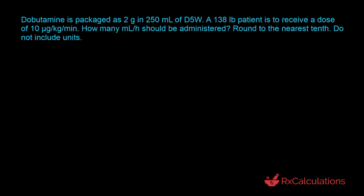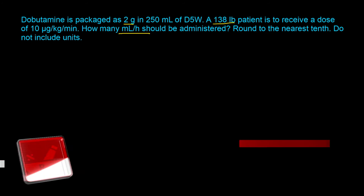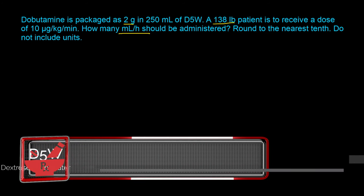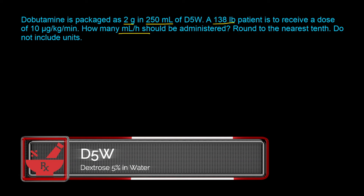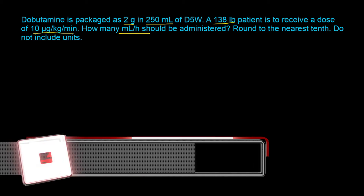In this question, the goal is to calculate the flow rate in milliliters per hour, and we've been given quite a lot of information. We have the patient's weight, which is 138 pounds. We also have the concentration — the amount of drug is 2 grams and the volume of D5W is 250 milliliters. And we have the normalized mass rate, which is 10 micrograms per kilogram per minute.